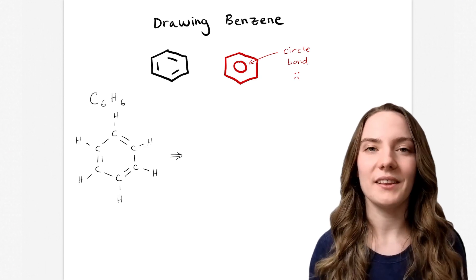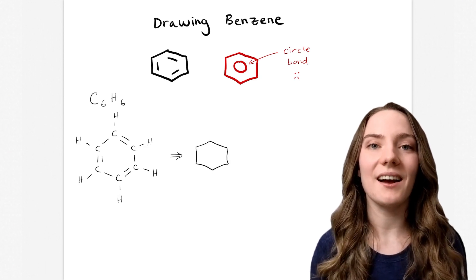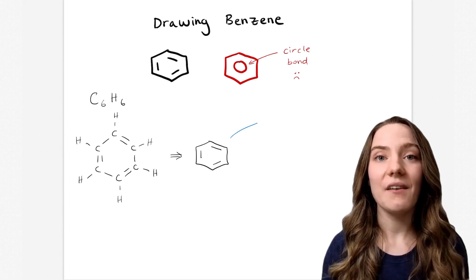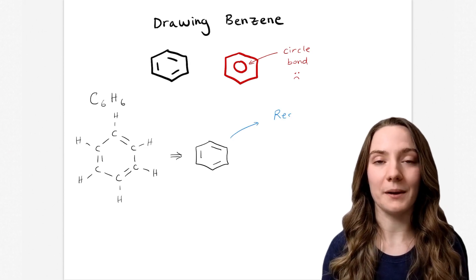And we can represent this without showing all the atoms using a line structure just like this. And now it would be only half of the story to stop drawing benzene there.